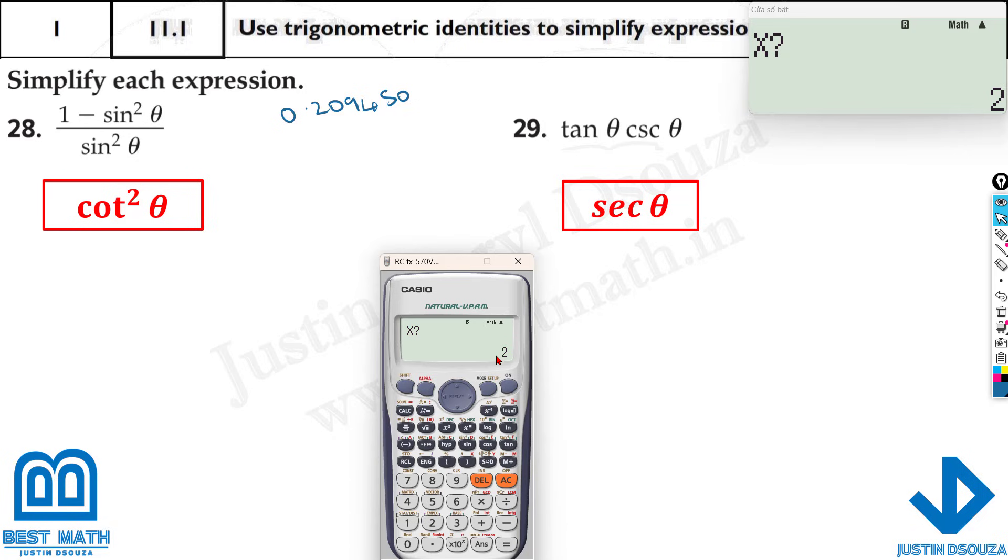Now if you're wondering can I calculate it at any other value? Yes you can but avoid 0, avoid 90 degrees, avoid 45 degrees. These are some tricky ones. The best value is just 2. You will get the answer almost all the time. I've tried all the problems. You will get the answer for this unless it is undefined at that particular value.